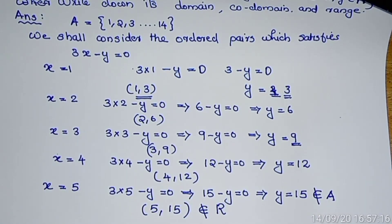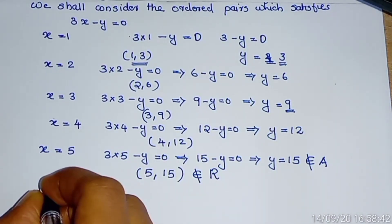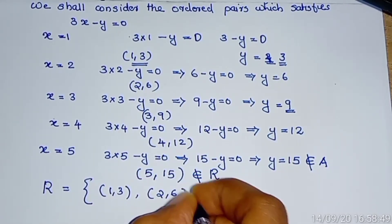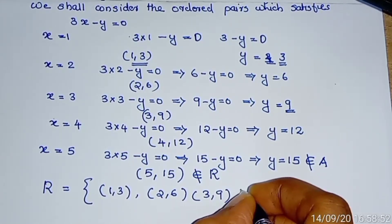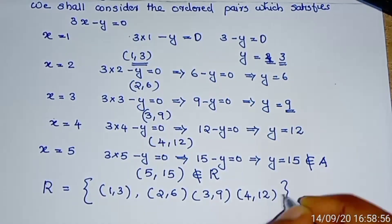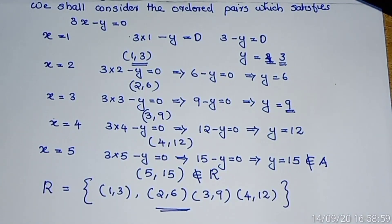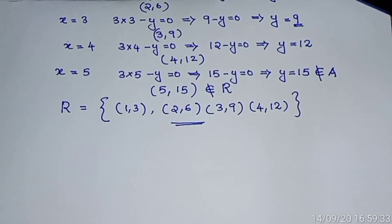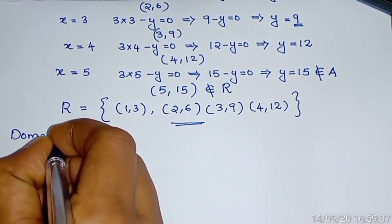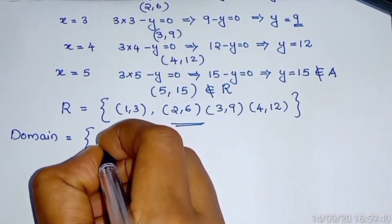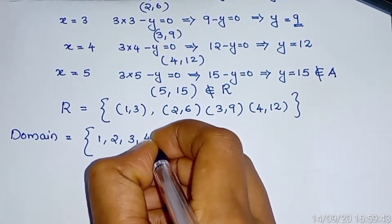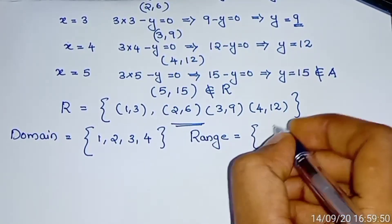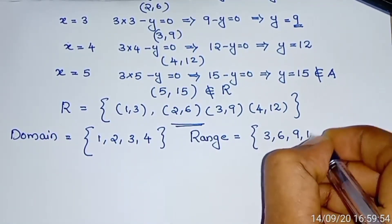So the elements of R equal the set of ordered pairs: (1, 3), (2, 6), (3, 9), (4, 12). These are the elements in R represented in roster form. Domain equals the first elements of the relation: {1, 2, 3, 4}. Range equals the second elements: {3, 6, 9, 12}.